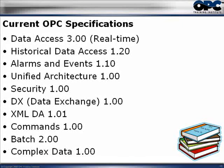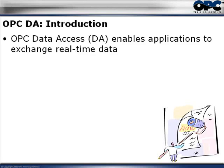When a vendor says they have an OPC server, you as the educated consumer should ask: what specification do you support? Do you support OPC Data Access, Historical Data Access, Alarms and Events? And then, what release do you support — OPC Data Access 1.0, 2.0, 3.0, all of them? These are the questions you should be asking your OPC vendors.